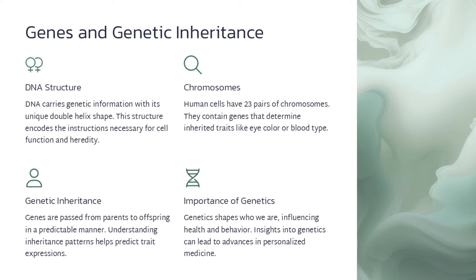This base pairing is critical for the accurate replication of DNA during cell division. The central dogma of molecular biology is a fundamental principle describing the flow of genetic information in biological systems. It outlines three key processes: DNA replication, transcription, and translation. DNA replication ensures DNA makes copies of itself before cell division. Transcription produces messenger RNA (mRNA) from DNA, and translation is when mRNA is read by ribosomes to synthesize proteins. Understanding the central dogma provides insights into gene expression and disease mechanisms.